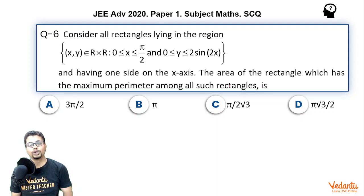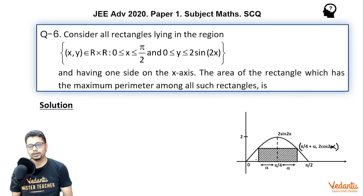So first of all, we will draw the graph of y equal to 2sin(2x) for x between 0 to π/2. So graph will turn out to be something like this. And since one side is going to be on x axis, the other side of the rectangle will be parallel to it. That means these two vertices would have the same y coordinates. Now these two vertices should lie on this curve because if these two vertices lie below this curve, then we defeat the purpose of having the maximum perimeter. So to have maximum perimeter, these two vertices should lie on this curve.